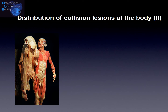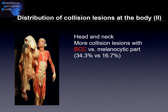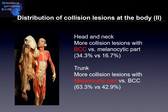When we looked at the distribution of collision lesions by body location, we found more collision lesions with BCC versus melanocytic part at the head and neck area. When we compare this with the trunk, more collision lesions with the melanocytic part — meaning nevus or melanoma — were found at the trunk compared to BCC. In summary: head and neck shows more BCC collision lesions, while the trunk shows more melanocytic collision lesions.